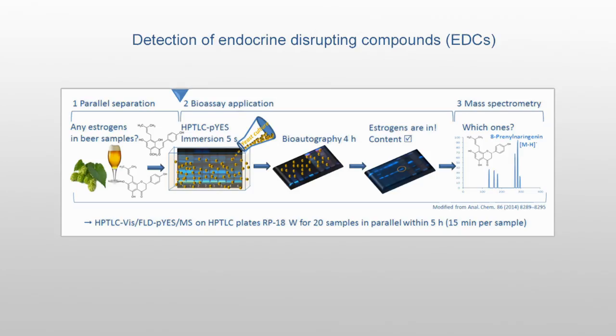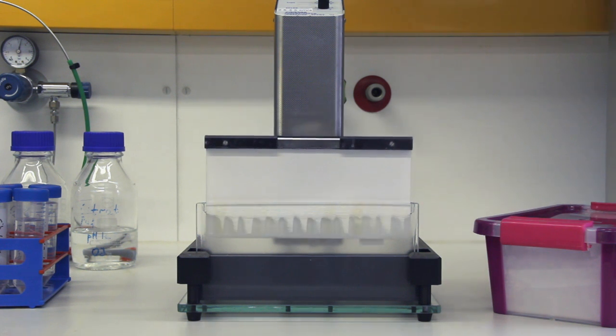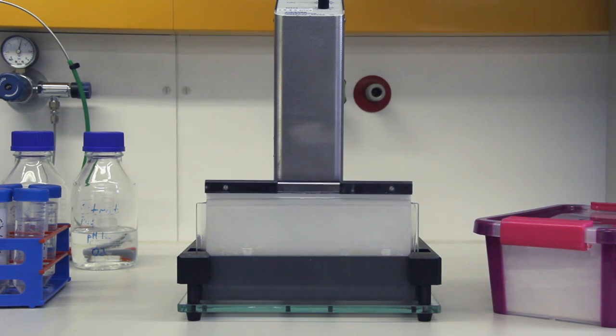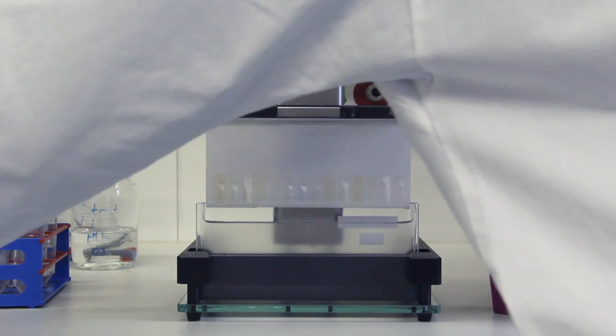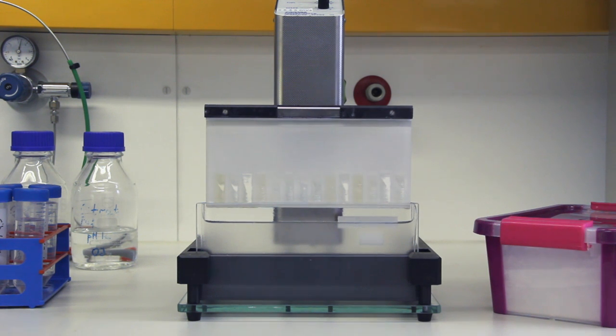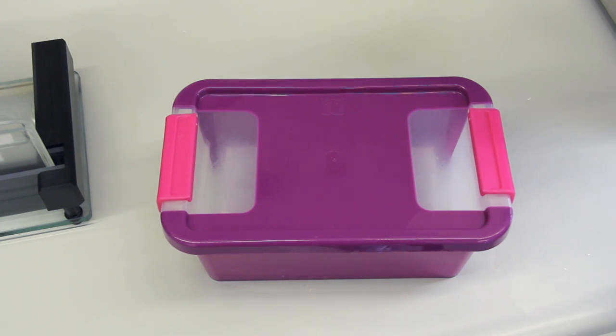After step 1, the parallel separation of the beer samples, step 2, the bioassay's application followed. For bio-detection of the estrogen-effective analytes, the developed plate was automatically immersed into the cell suspension for 5 seconds, using the chromatogram immersion device at an immersion speed of 3.5 cm per second.